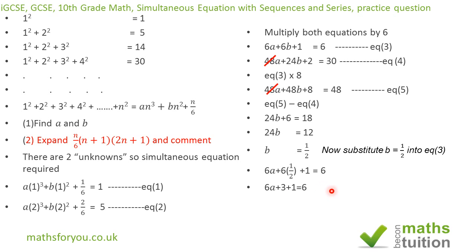We get 6 minus 4, which is 2. So 6a equals 2, meaning a equals 2 over 6, which simplifies to 1 over 3. So the answers are: b equals one half and a equals one third.